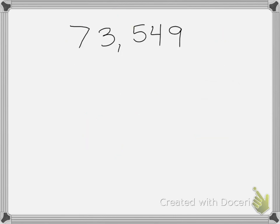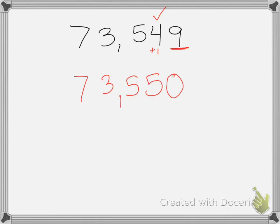Let's try it with this number: 73,549. First, we're going to round it to the tens place. I put a check above the tens place and look to the right to see if this number is more than five — and it is. So I add one to the four; the four becomes a five. Everything to the right becomes zero, and everything to the left stays the same. So rounding to the tens place, it would be 73,550.